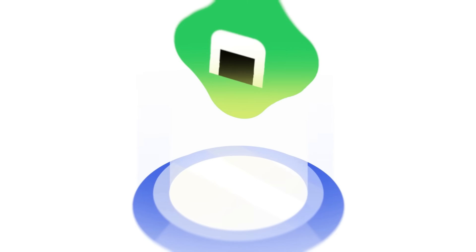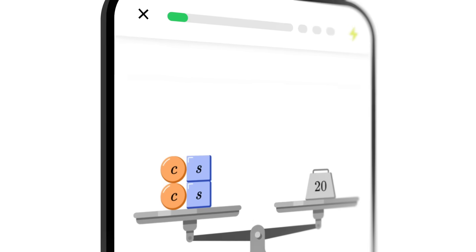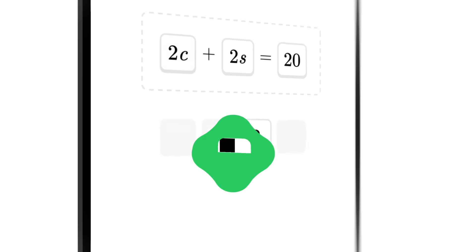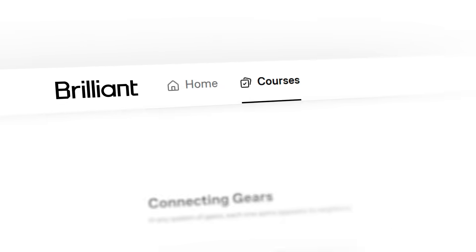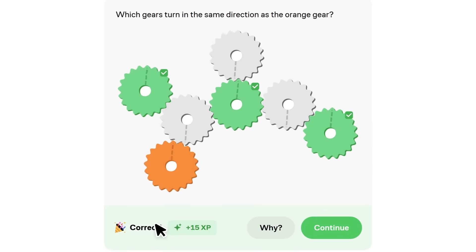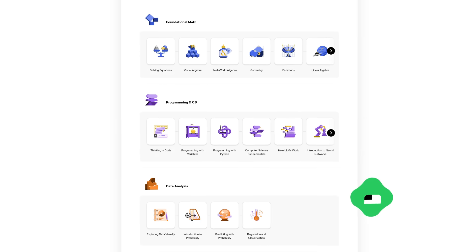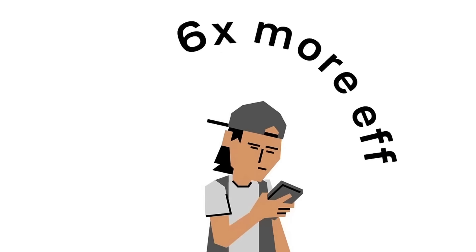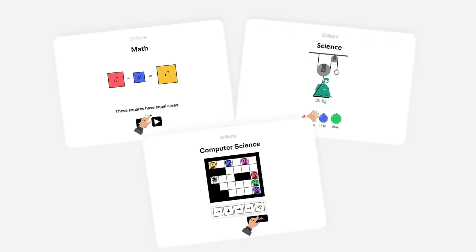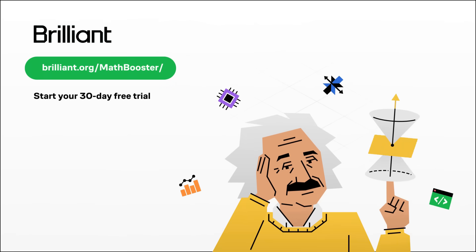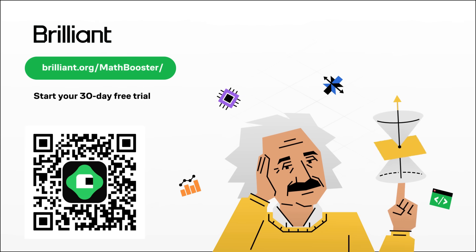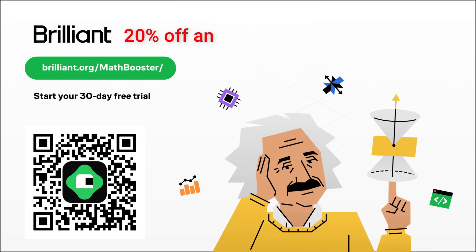If you want to build critical thinking skills through problem solving, Brilliant is the best platform for you. Brilliant helps you become a better thinker and problem solver with thousands of visual, interactive lessons in math, science, computer science, and AI. I have been using it to sharpen my logic. A study showed that interactive learning is six times more effective than watching lecture videos. To try everything Brilliant has to offer for free for a full 30 days, visit Brilliant.org/mathbooster or scan the QR code on screen. Or you can click on the link in the description. You will also get 20% off an annual premium subscription.